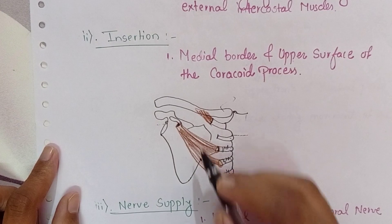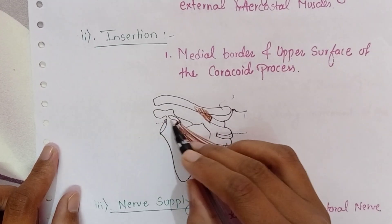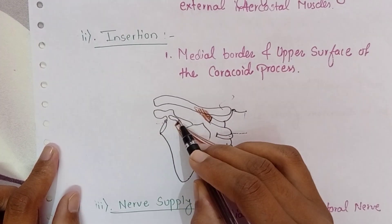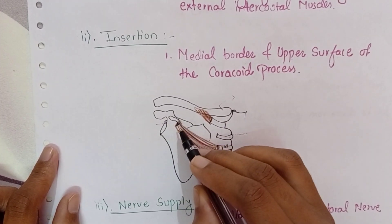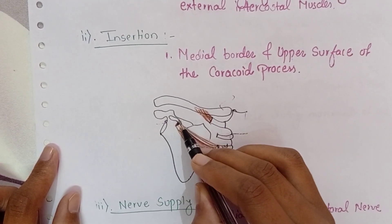Here the scapula is there, the coracoid process is there — the medial border and the upper surface.